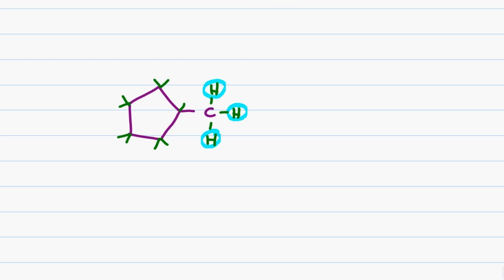The tertiary carbon on the ring has a unique hydrogen making it one type. Next to that I have two hydrogens on a secondary carbon, however since this is symmetrical, the two lower hydrogens on the secondary carbon are also equivalent.